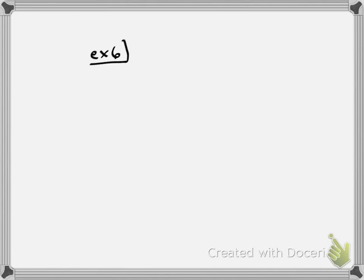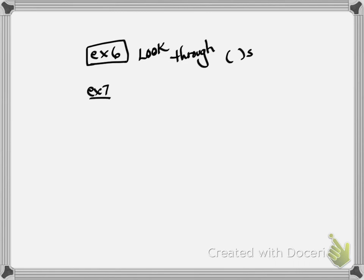Please look at Example 6 on your own, because it shows the power of parentheses — how adding a simple set of parentheses can totally change what you're doing for the problem. Example 7, part A: f(x) equals x to the third minus 4x plus 5.